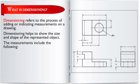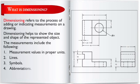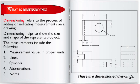The measurements include the following: 1. Measurement values in proper units. 2. Lines. 3. Symbols. 4. Abbreviations. 5. Notes. These are examples of dimension drawings.